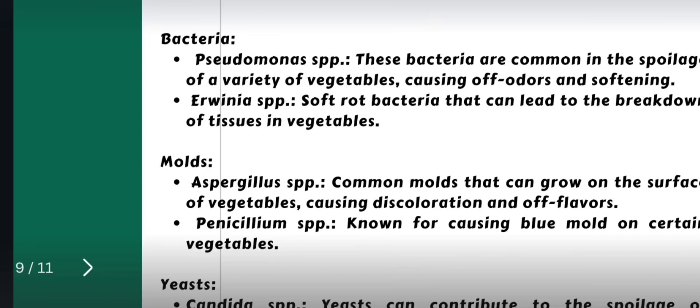Similarly, Penicillium species are also known to grow on the surface of vegetables. We can easily distinguish between microbially spoiled and healthy vegetables due to the visible growth on the surface of the vegetables.